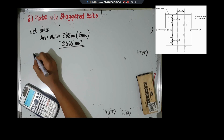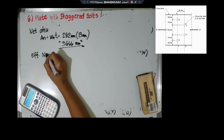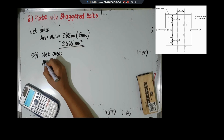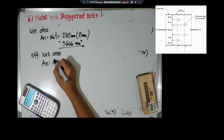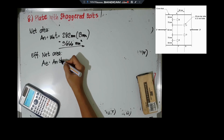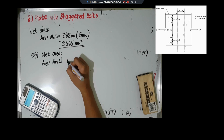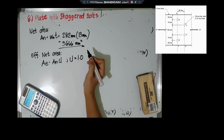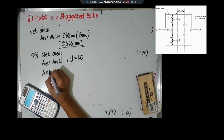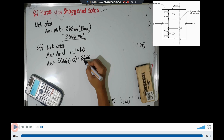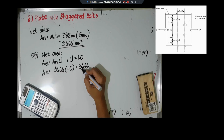For finding the effective area, we multiply the net area by a shear lag factor. Opening NSCP 2015, under Case 1, the tension load is transmitted to all elements by the fasteners, so U = 1.0. Multiplying by our net area, the effective net area is also equal to 3,666 mm².